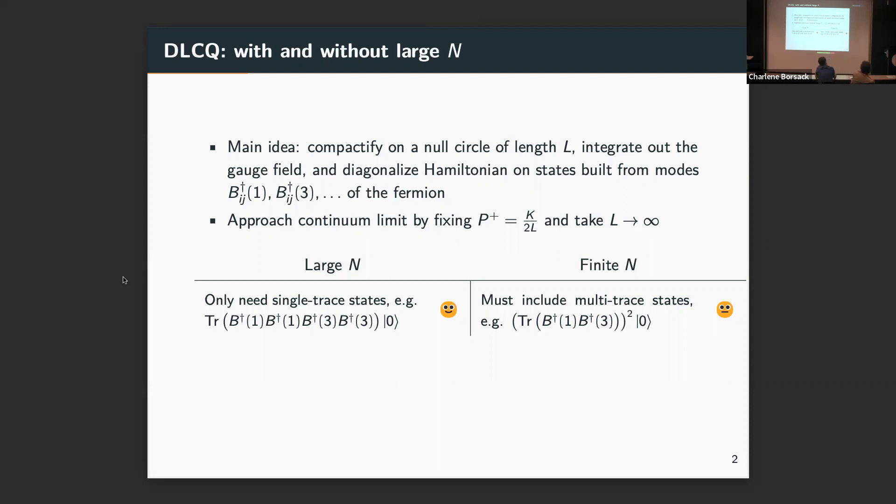When we go to finite N, we're going to have terms in our effective Hamiltonian that break and join strings. At large N we can restrict states built from a single trace of these operators. For finite N we have to include multi-trace states. This is not great from an numerics point of view, but it's fine. The growth in number of states is under decent control. We have big computers, so this is fine. Not a problem.